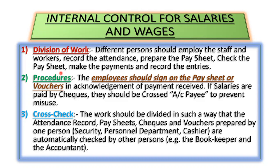Next is cross-checks. The work should be divided so that attendance records, vouchers, and checks are prepared by one person — for example, the security or personnel department — and verified by another person. If one person prepares the documents, a different person should check whether what was prepared is correct or not. By involving multiple employees, the chances of fraud and errors can be prevented or identified, and corrections can be made accordingly.